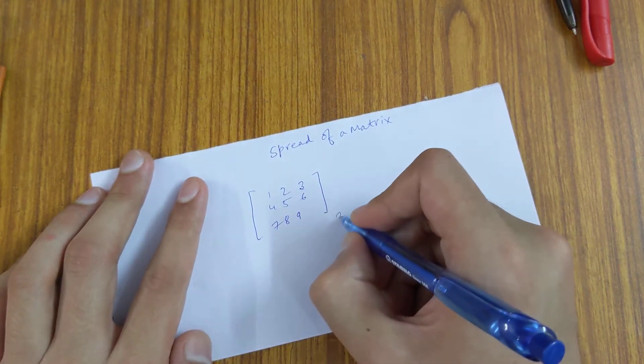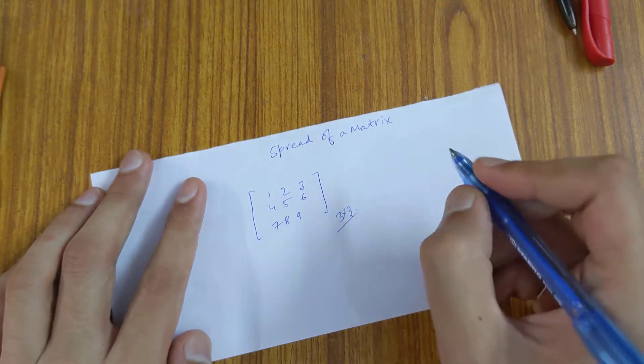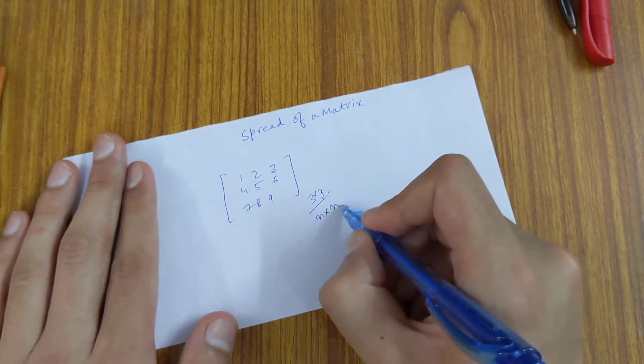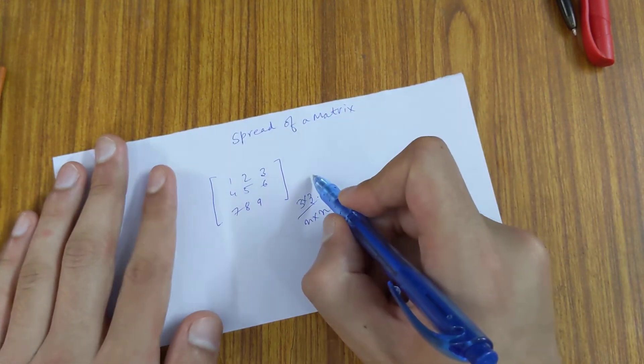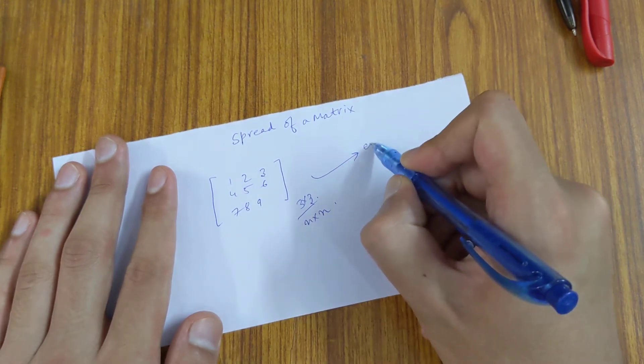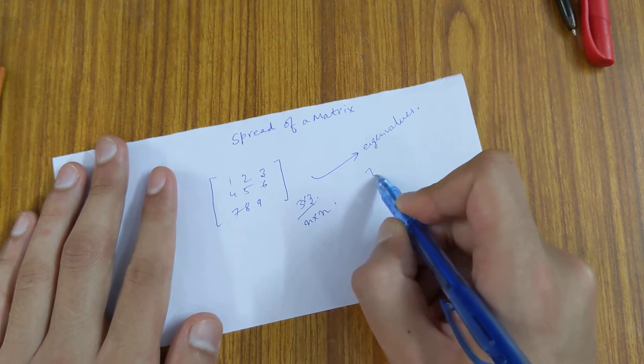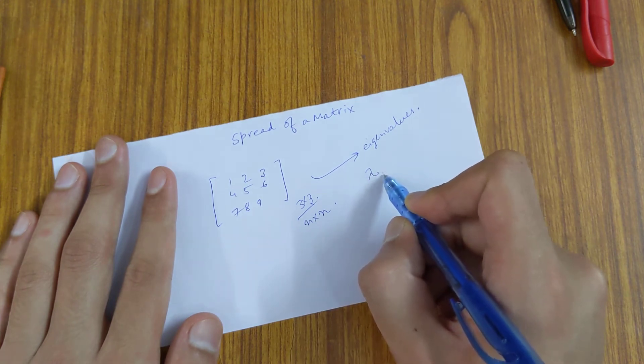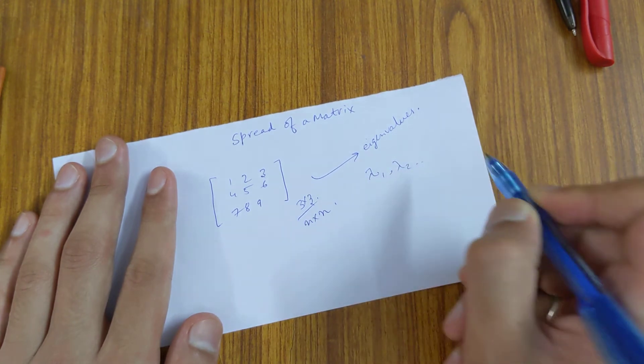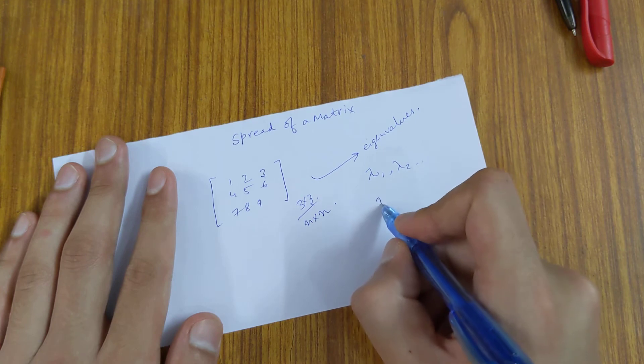It's a 3 by 3 matrix. It can be any size n by n. So if we compute the eigenvalues of this matrix, those eigenvalues come out to be lambda 1, lambda 2, and so on.